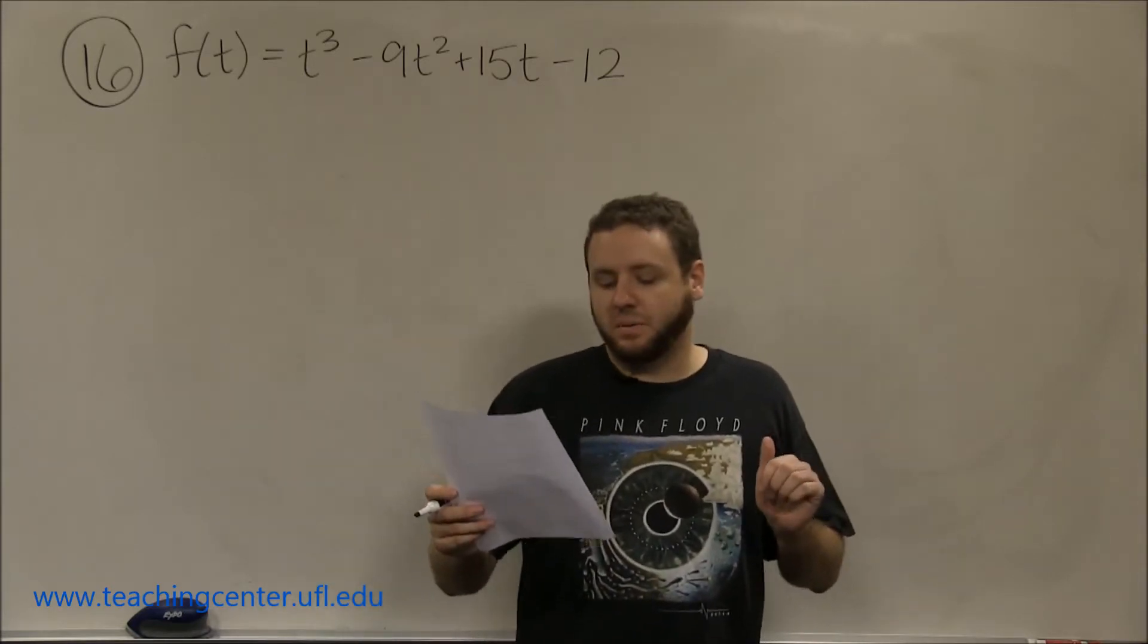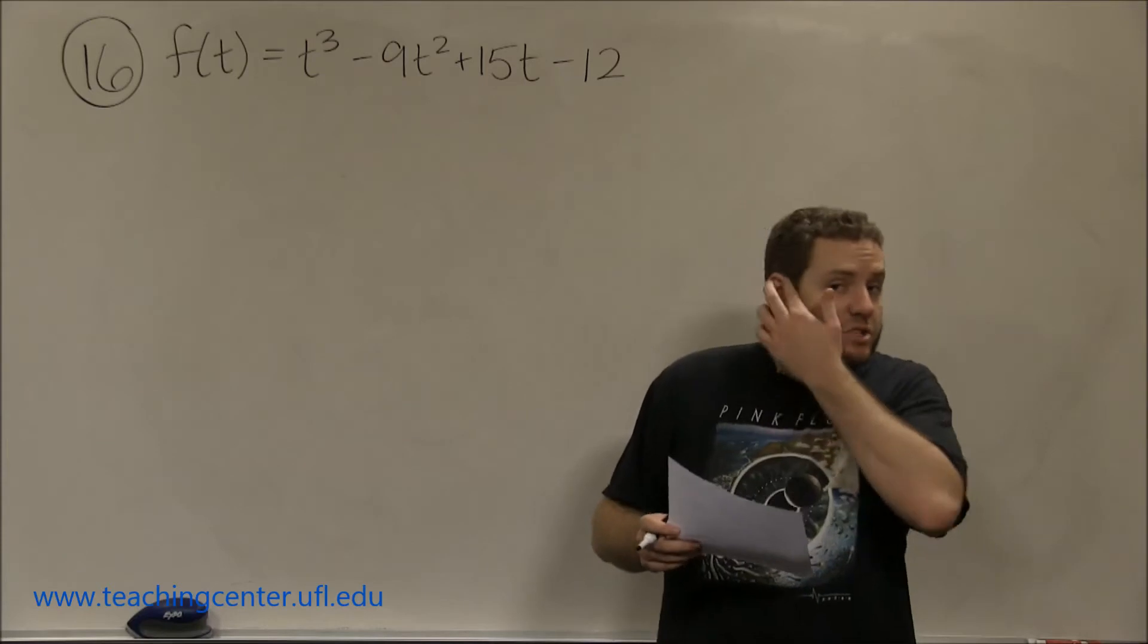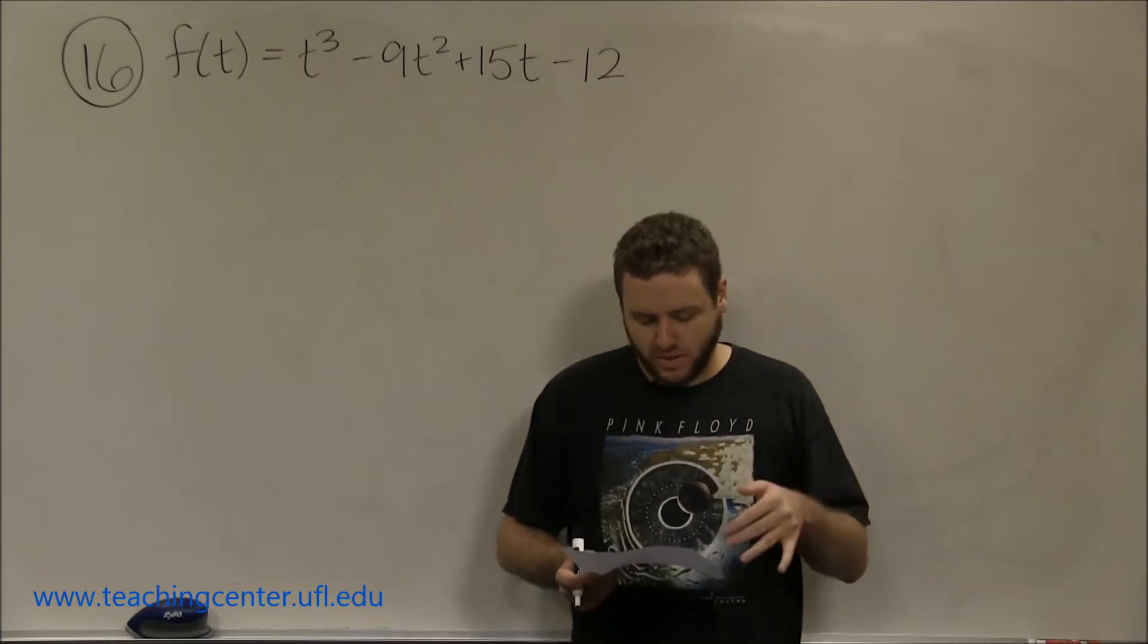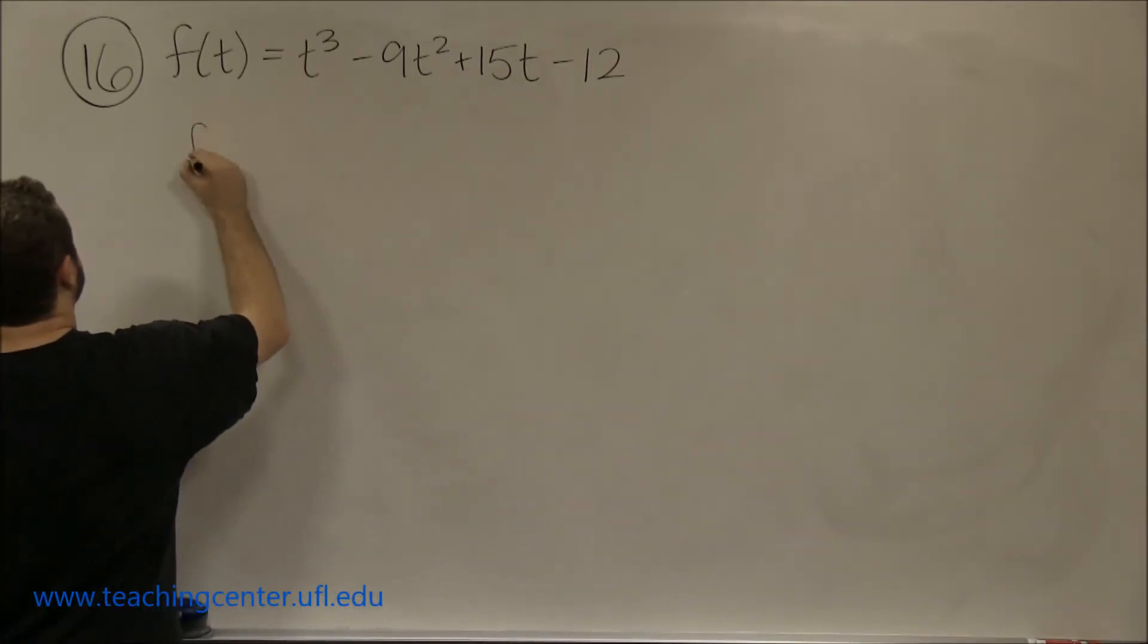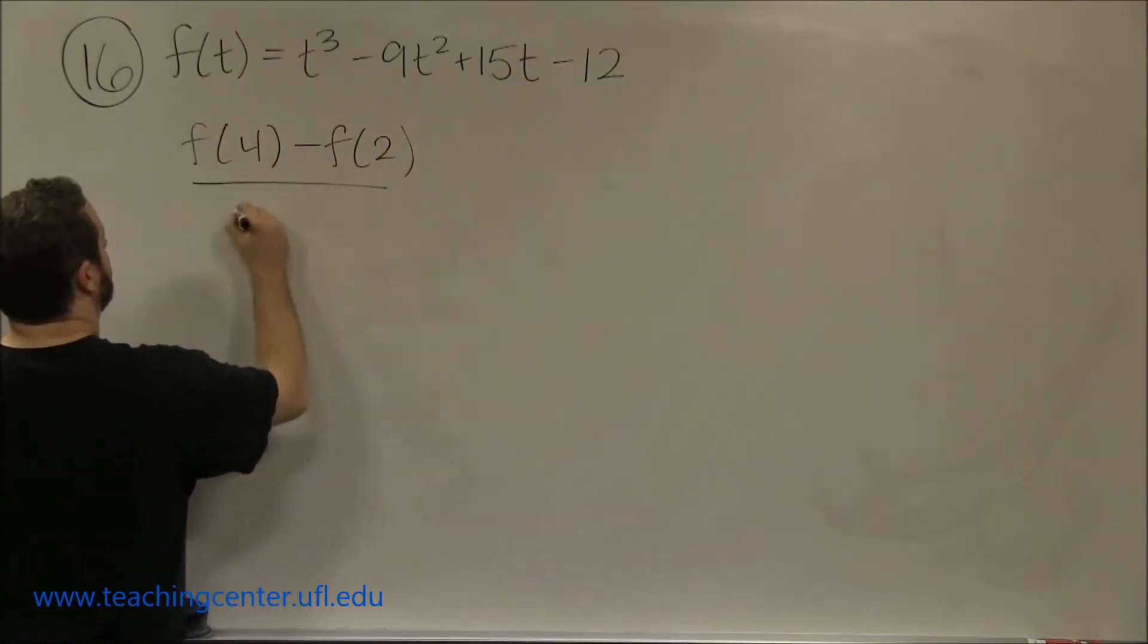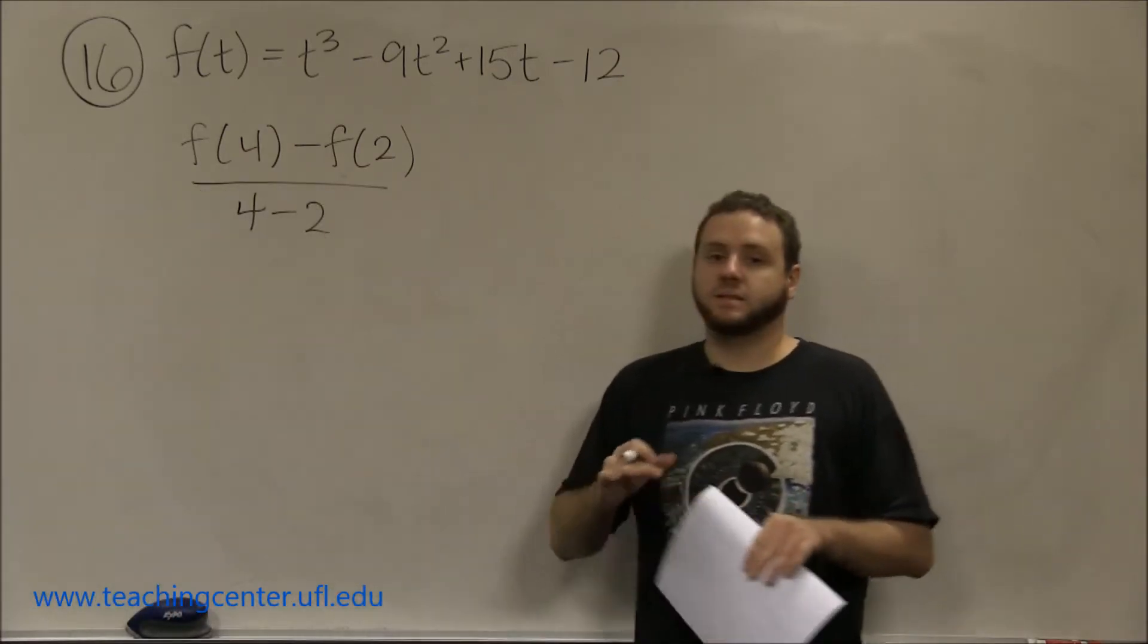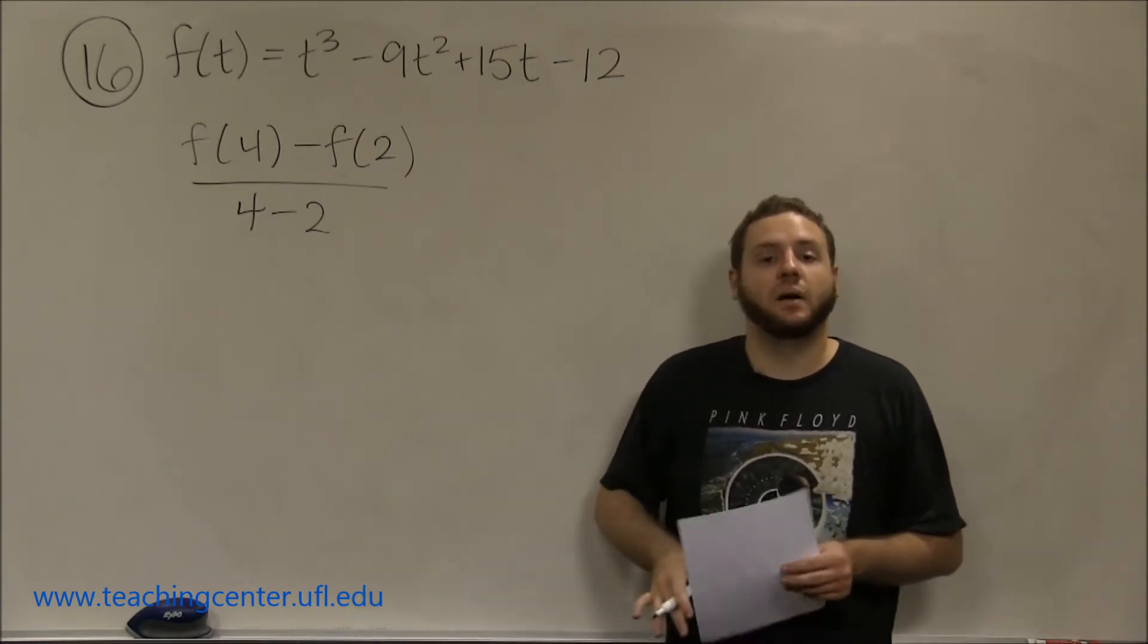For part a, we're asked to find the particle's average rate of change from 2 to 4 seconds. Remember that an average rate of change or an average velocity is always just finding the slope from one point to the next. So this would be the slope between x equals 2 and x equals 4.